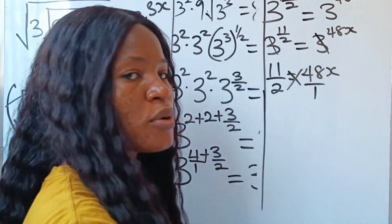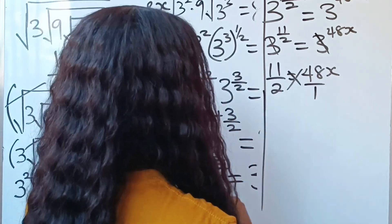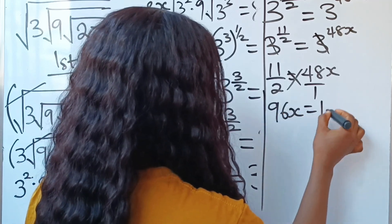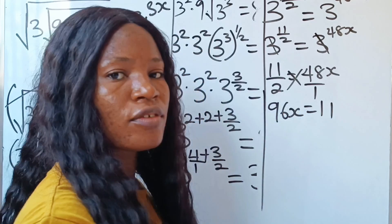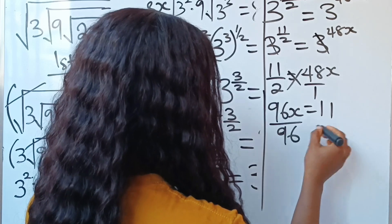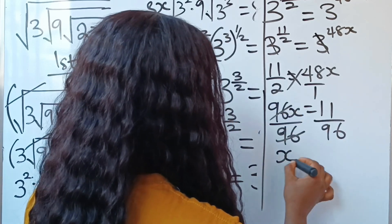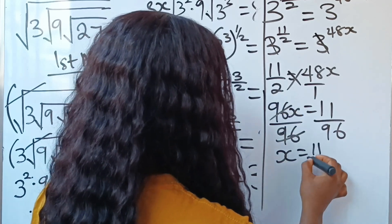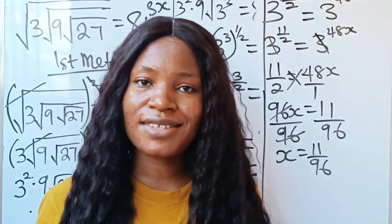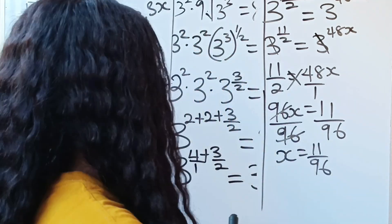We do cross multiplication: 48x times 2 gives us 96x, which equals 11. To find x, we divide both sides by 96, giving x equals 11 over 96. That is the first method. Now let's use the second method.